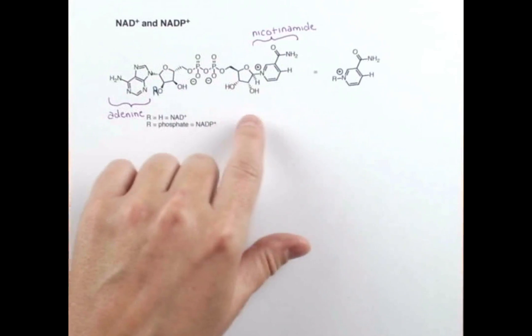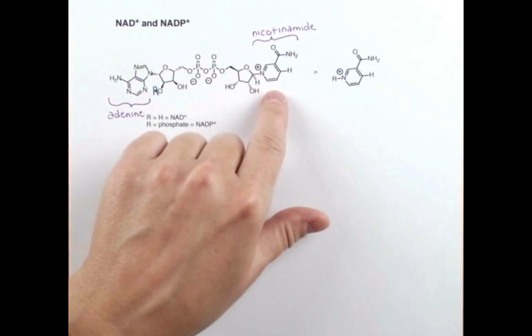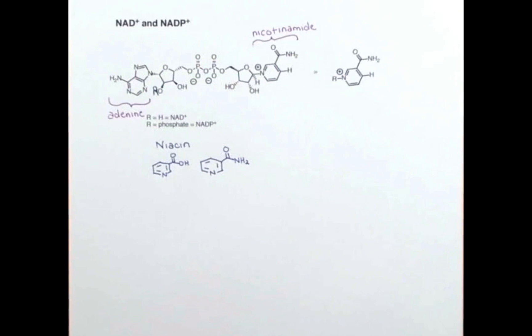Now this coenzyme needs to be biosynthesized in our body, and this nicotinamide portion can come from the diet. An easy way to get it is through vitamin B3, which is also called niacin. Niacin, or vitamin B3, is actually a mixture of these two compounds, one of which is the amide, maps on very nicely here, and one of which is the carboxylic acid. Many foods are rich in vitamin B3. However, if we're not getting enough from our diet, we can synthesize this from tryptophan.